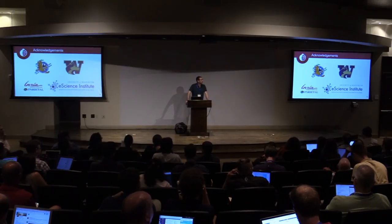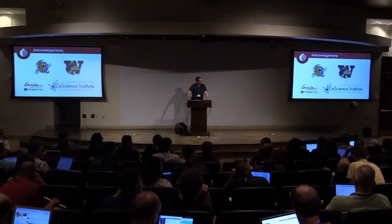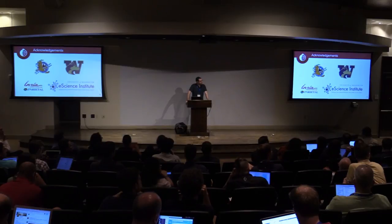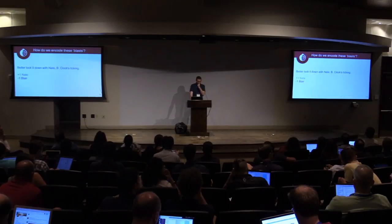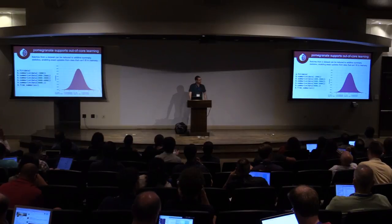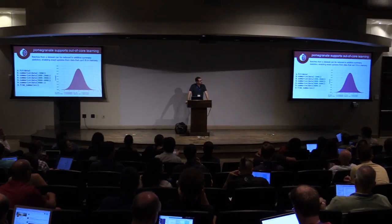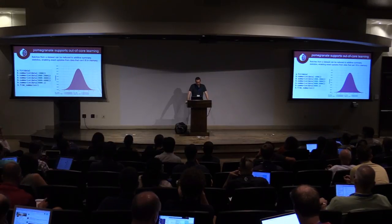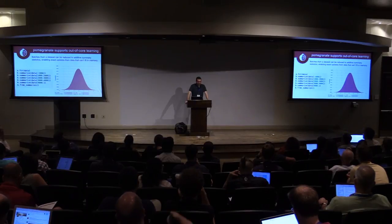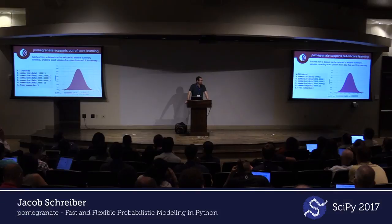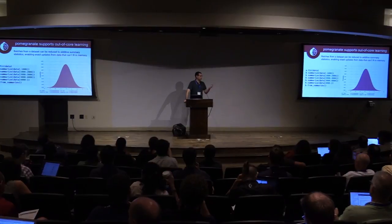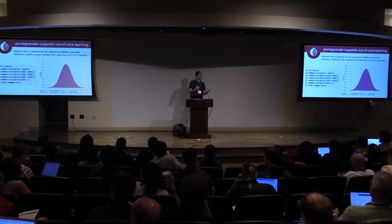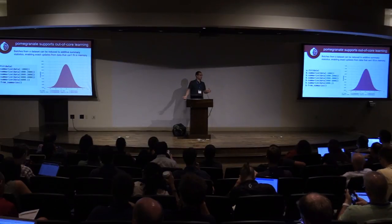We have around five minutes for questions. Question about whether the out-of-core batched update produces the exact same result as the full fit method. Yes, it does because of these additive sufficient statistics — you are doing the exact same calculations, just not loading all the data at once. You get the exact same numbers. In fact, the fit function in Pomegranate's back end just calls summarize and then from_summaries once.